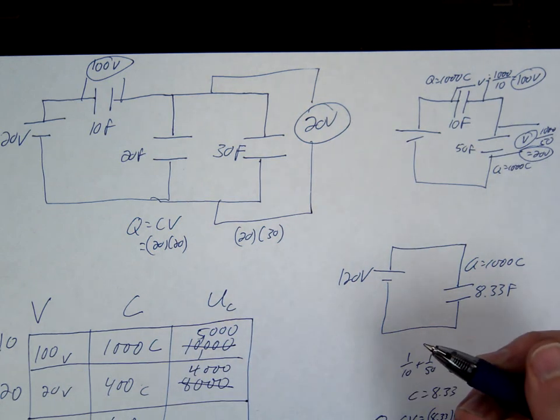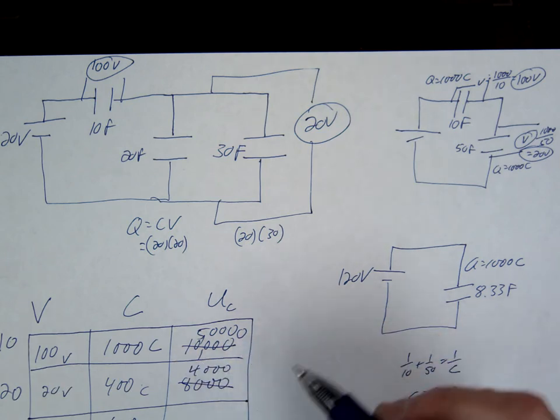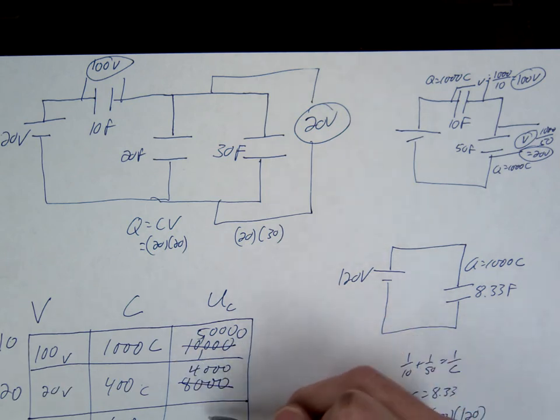50,000. How about 50? 5,500. 4,000. 6,000. Okay. Someone read these off to me. 50,000. 4,000. 6,000. Okay.